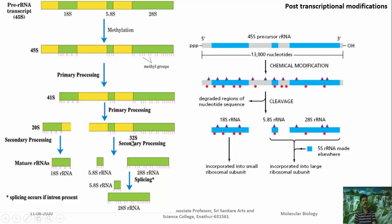Eukaryotic rRNA initially exists as a 45S precursor containing 18S, 5.8S, and 28S rRNA sequences. After methylation, its size is slightly reduced and primary processing produces a 41S intermediate, which is then cut into a 20S fragment and a 32S fragment. Secondary processing of the 32S fragment yields 5.8S and 28S rRNAs, while the 20S fragment gives 18S rRNA. The 28S rRNA combines with 5.8S rRNA, and if introns are present, they are removed by splicing.